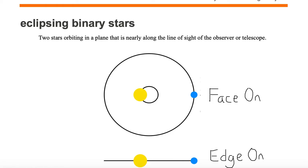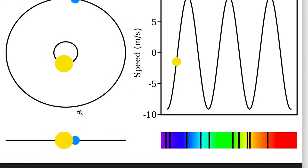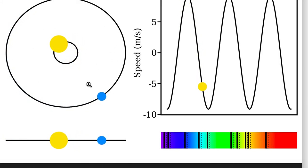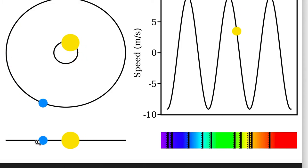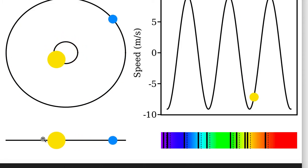Let's look at an animation of eclipsing binary stars. Here's our face-on orbit, that's not what we want. We want this edge-on orbit where we have the binary stars eclipsing each other.